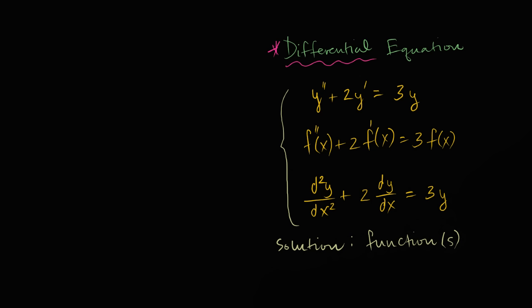So one solution to this differential equation — I'll call it y₁, or y₁(x) to make it explicit that it is a function of x — one solution is y₁(x) = e^(−3x). I encourage you to pause this video right now and find the first derivative of y₁ and the second derivative of y₁, and verify that it does indeed satisfy this differential equation.